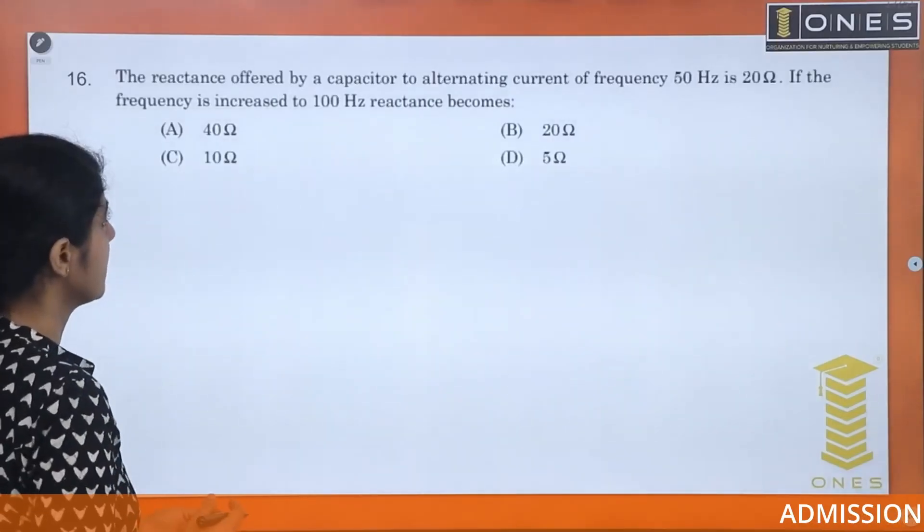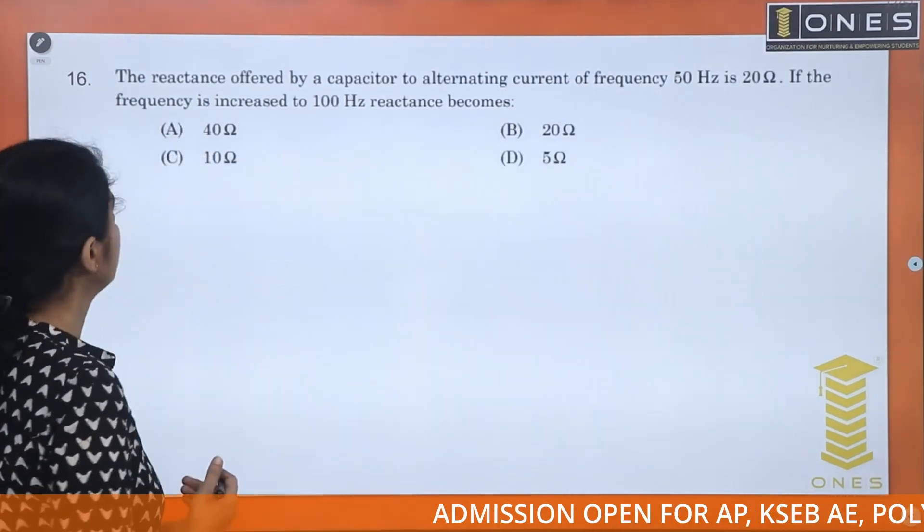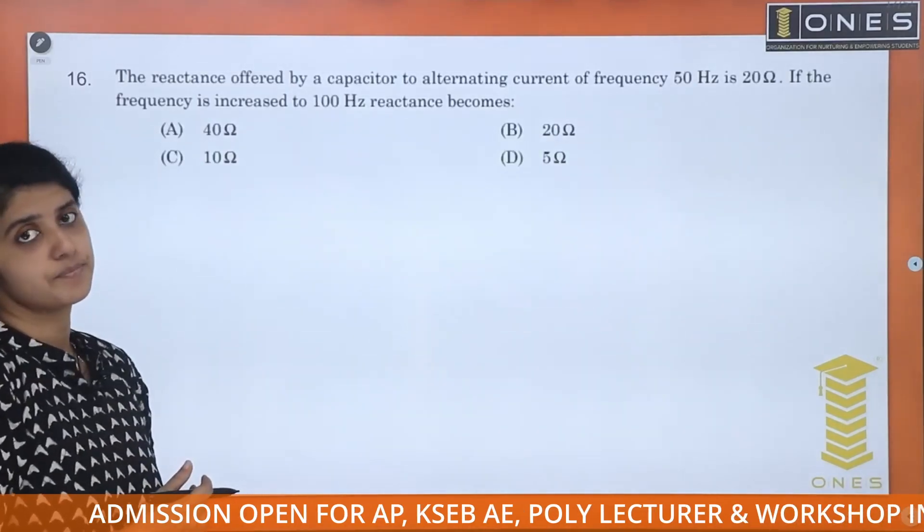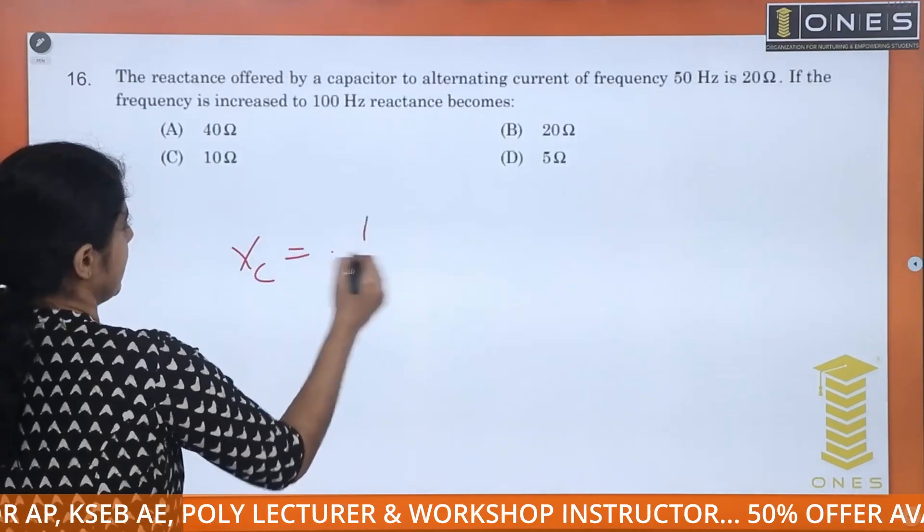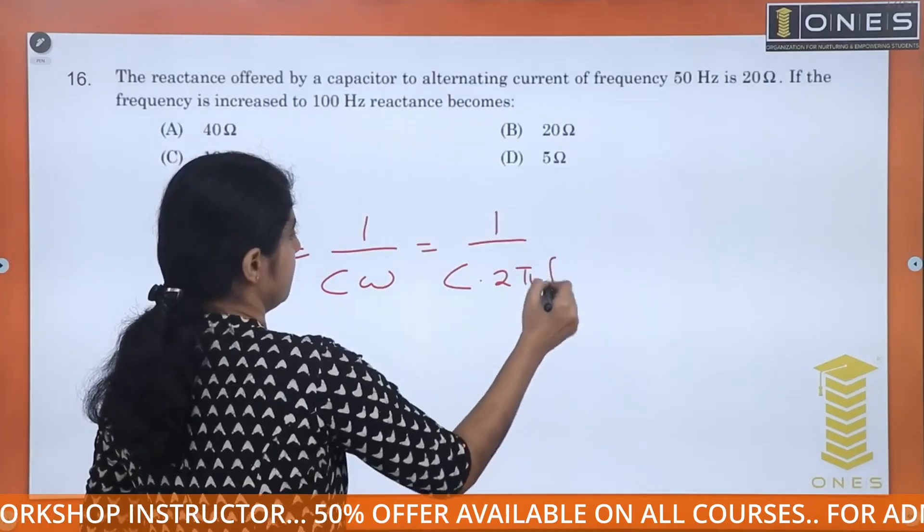The reactance offered by a capacitor to alternating current of frequency 50 Hz is 20 ohm. If frequency is increased to 100 Hz, reactance becomes? The capacitive reactance Xc is 1 by c omega, which is 1 by c into 2 pi f.